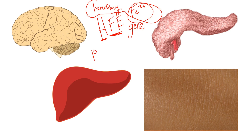There are two types: primary hemochromatosis means you are born with the problem — the HFE gene mutation we've been discussing. Secondary hemochromatosis means something else is causing excess iron, not the HFE gene. The main cause of secondary hemochromatosis is chronic blood transfusions.